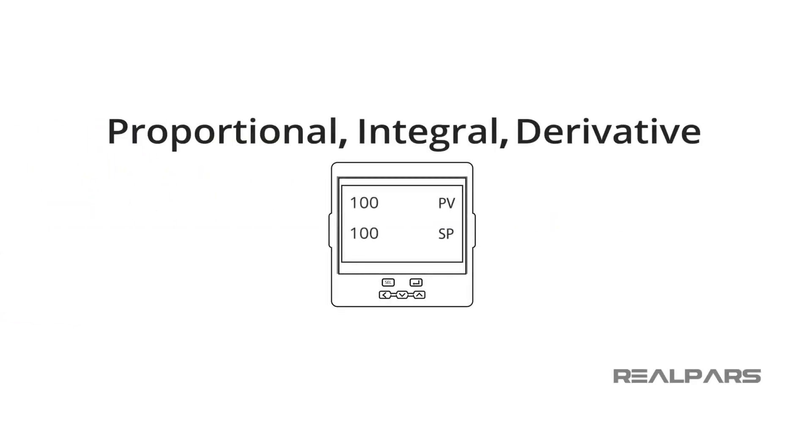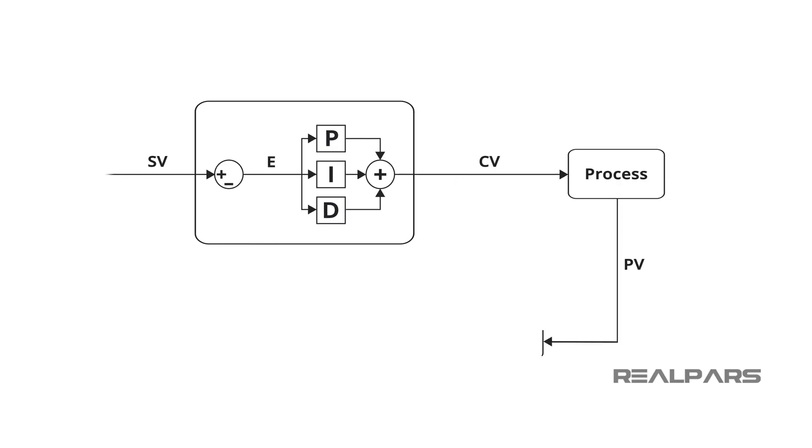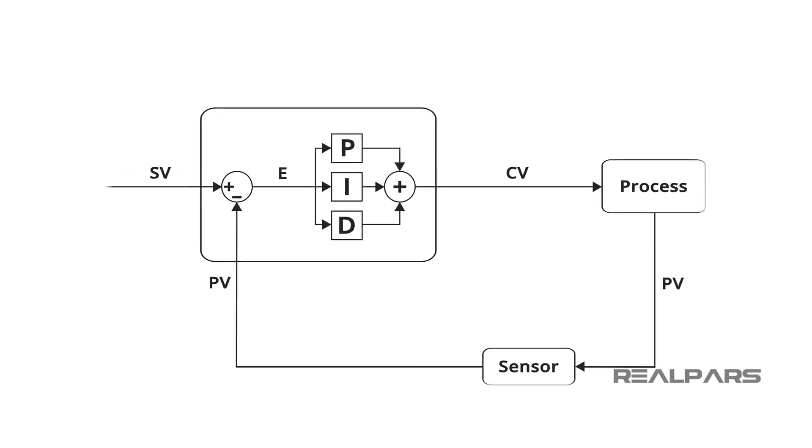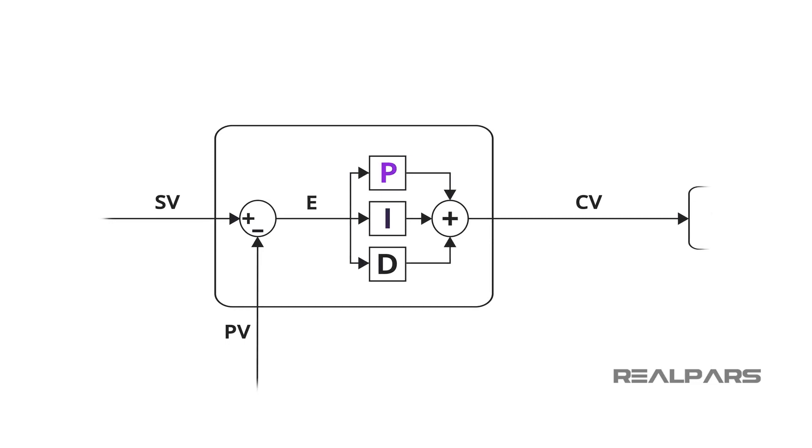Now, let's discuss what the parameters are and how they are used. In the most simplistic terms, the controller calculates the P, I, and D actions and multiplies each parameter by the error, or E, which is equal to set point minus process variable in direct acting, as discussed previously. Then, all parameter calculations are added up to produce the control variable.